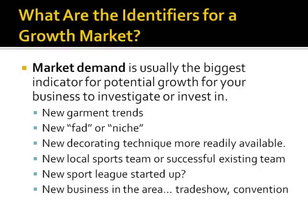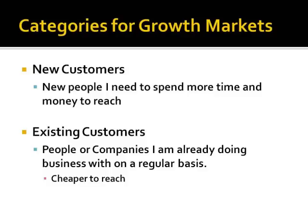Now we need to identify the different categories these growth markets could fall into for our business. There are two main categories for growth markets: new customers and existing customers. New customers, of course, are new people or businesses that I need to spend more time and money to reach. Existing customers are people or companies I'm already doing business with on a regular basis or have done business with in the past. In part one of this article, we'll review how to broaden our appeal to our existing customers.